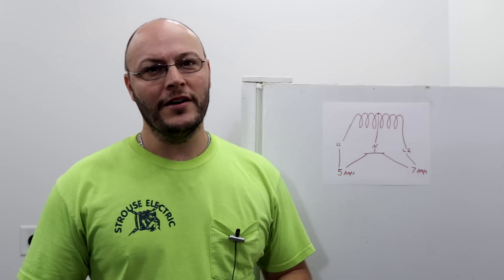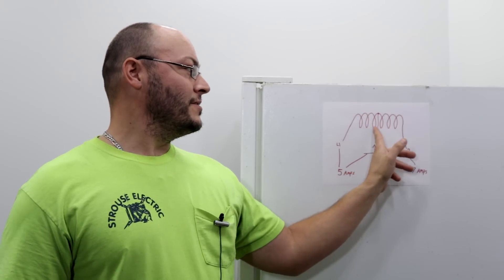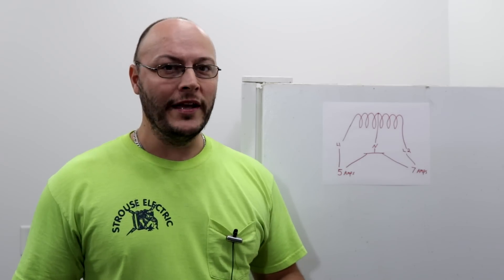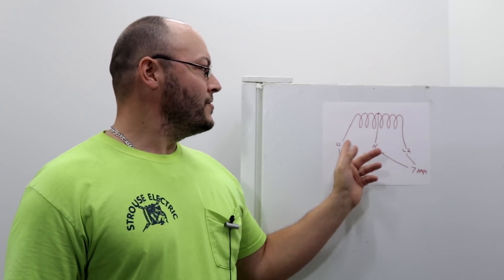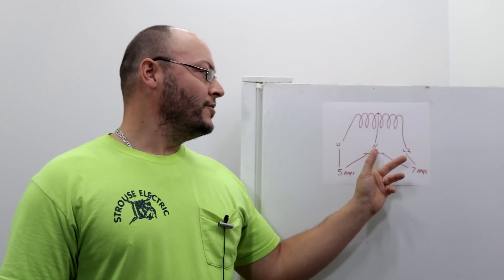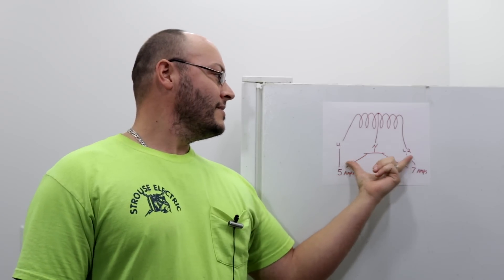That's what this coil of writing is right here - this is representing the secondary windings of the transformer that's at the pole, and those three wires run to your main panel. That's your L1, your neutral, and your L2.